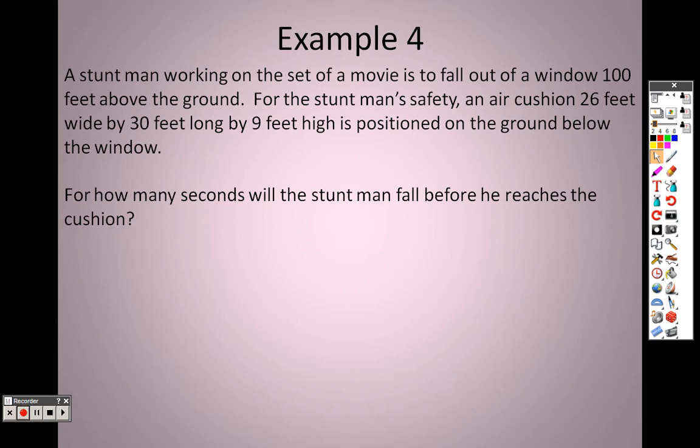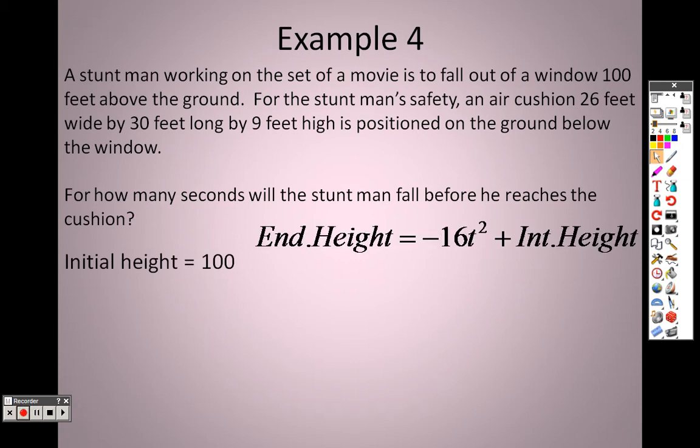For how many seconds will the stuntman fall before he reaches the cushion? Well, his initial height is 100 feet, and this is the equation to find out when he falls. This is the end height equals negative 16t squared plus the initial height. Well, his initial height was 100.